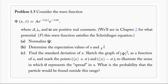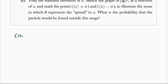Today we'll be taking a look at problem 1.5 from Griffith's Introduction to Quantum Mechanics, third edition. We consider the wave function psi of x comma t given with three different constants, all of them positive and real, and we are asked in part a to normalize the wave function.